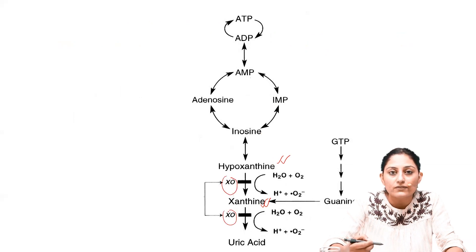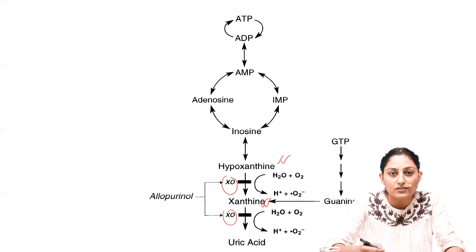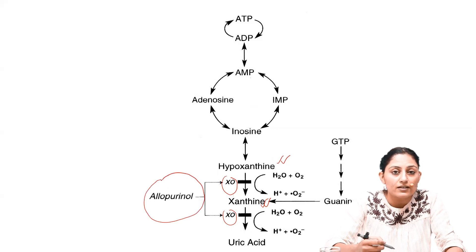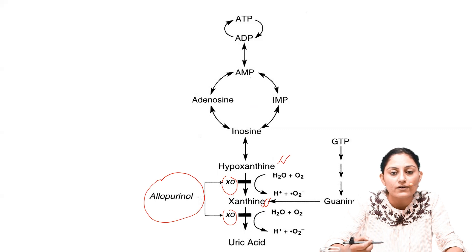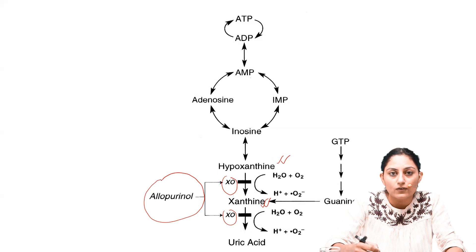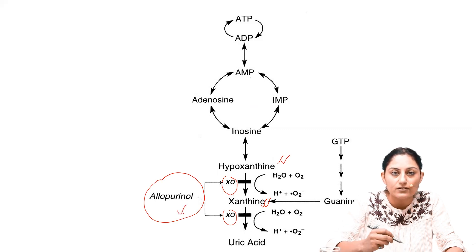One important pharmacological association is that xanthine oxidase is inhibited by allopurinol. Allopurinol is the structural isomer of hypoxanthine, making it the analogue of hypoxanthine. So allopurinol is the right answer.